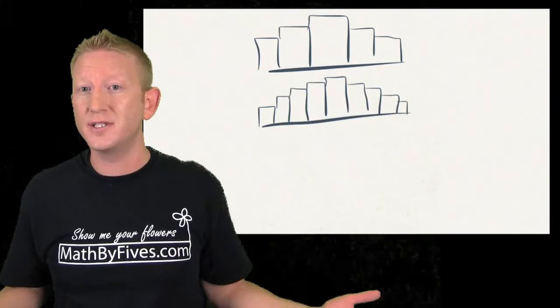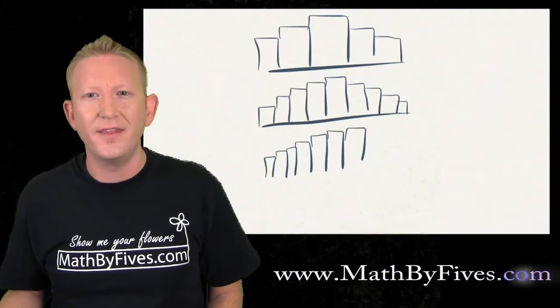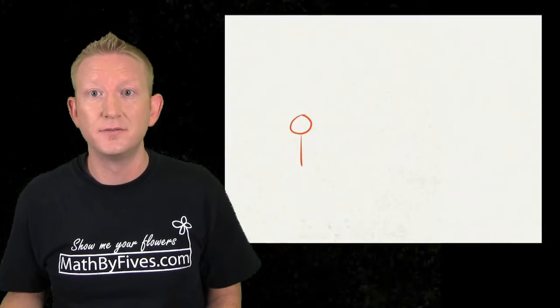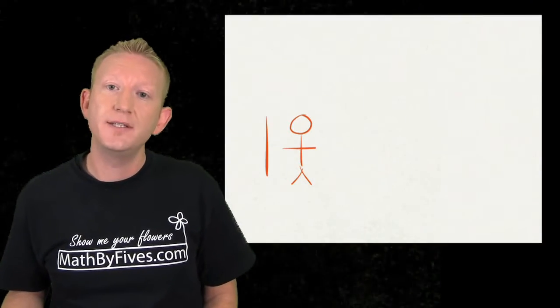Now our variables can assume any values on a number line. Think about time. Think about height, right? We're talking about continuous distributions.